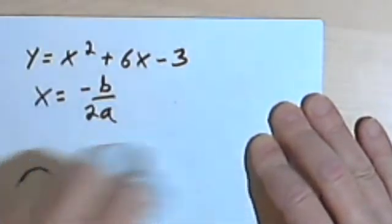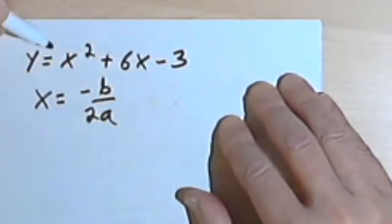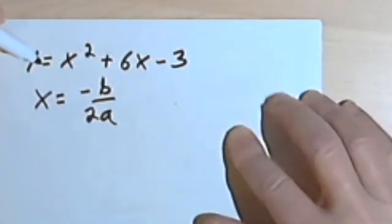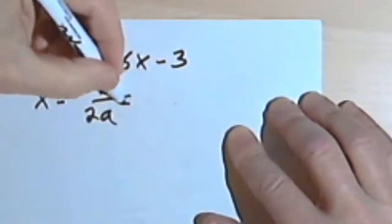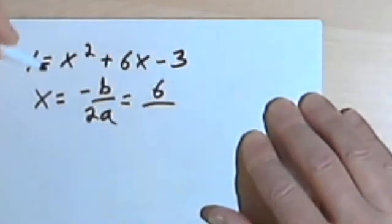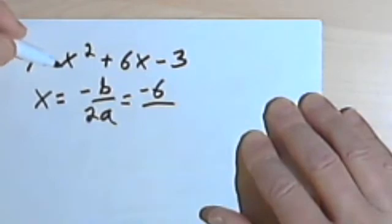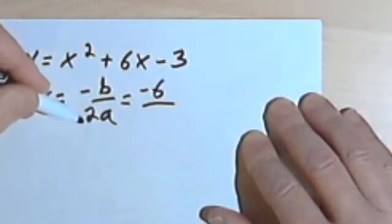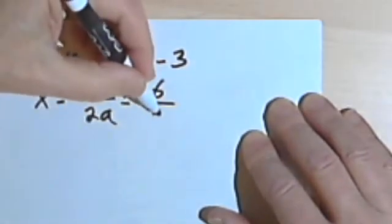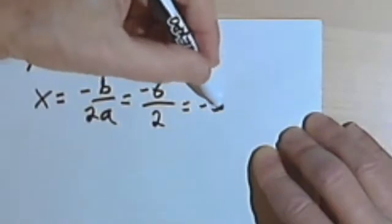So if I want to find the x-coordinate for the vertex of this equation, I'm going to take my b-value. The b is the coefficient of the x, so that's just a 6, and put that over 2a. I'm sorry, that should be negative 6. Put that over 2a. Well, a is the coefficient of x squared, and since I don't see one here, the coefficient is 1. So 2a, 2 times 1 is 2, and then I'll just take that negative 6 over 2 and reduce it to negative 3.